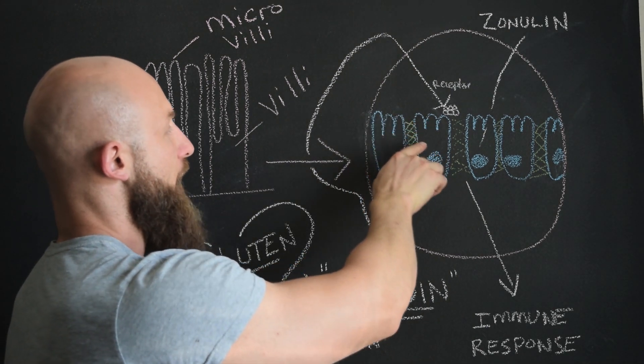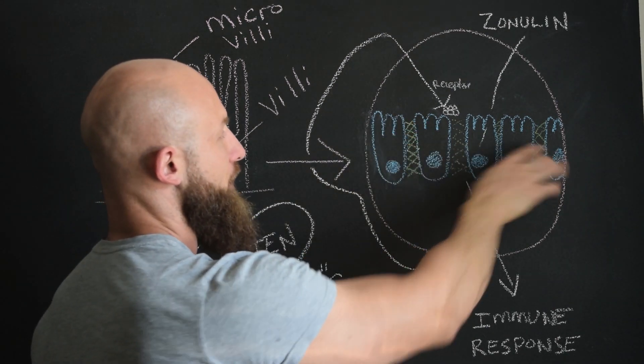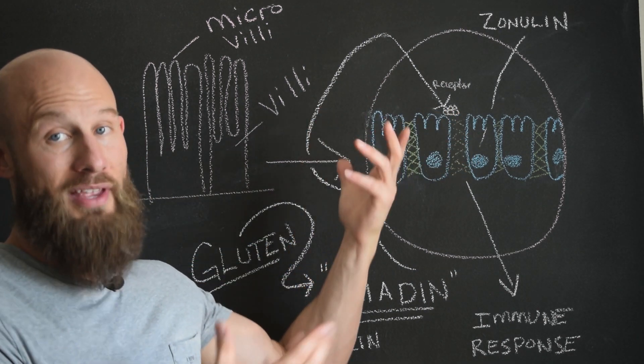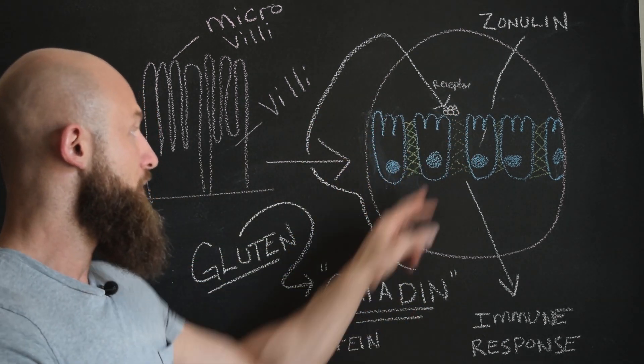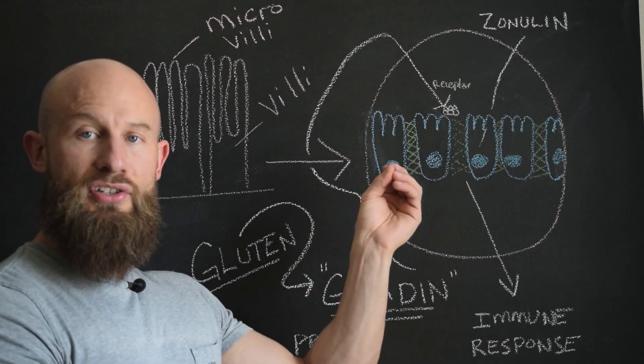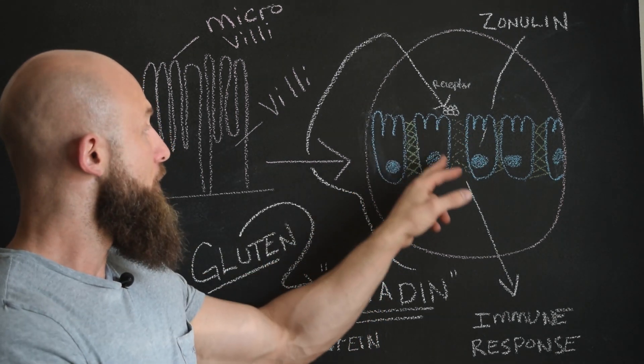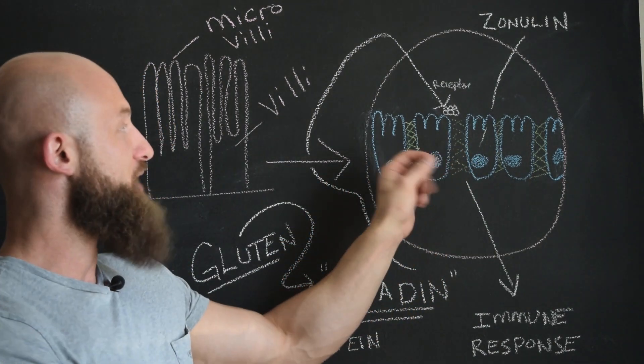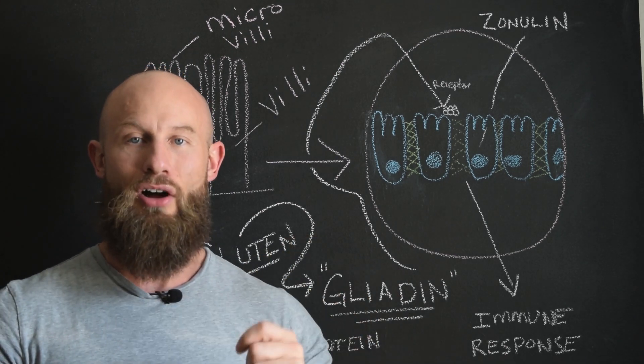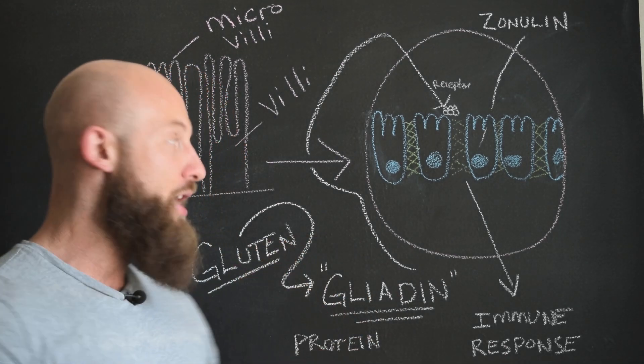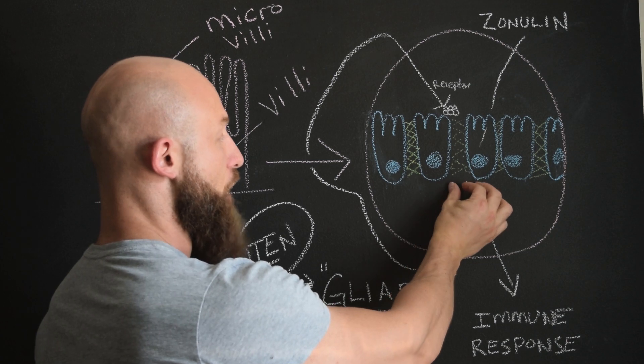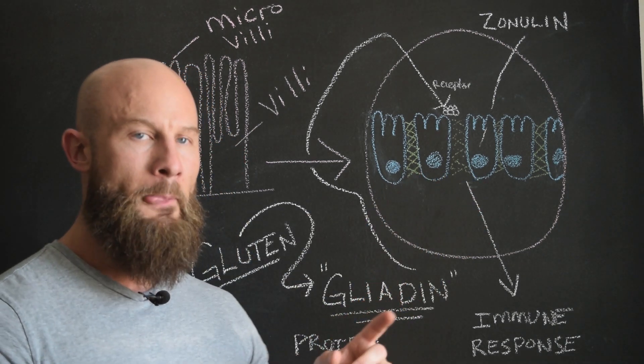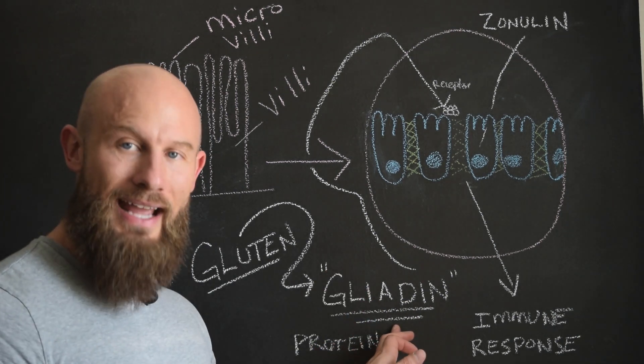When it touches these epithelial cells, there's receptor sites on these cells that don't really recognize this gliadin, and they signal to the junctions to actually open up. What causes the opening of these cell linings is there's actually a protein within us called zonulin. And zonulin is responsible for the opening, the widening of the cell lining. And why does that happen? Because the body doesn't recognize gliadin.